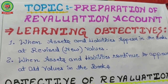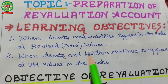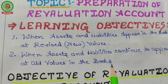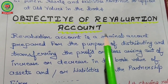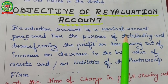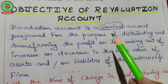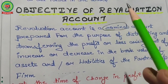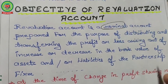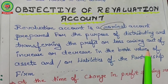The topic is preparation of the revaluation account. The learning objectives are: when assets and liabilities appear in the books at revised new values, and when assets and liabilities continue to appear at old values. The objective of the revaluation account — revaluation account is a nominal account. The rule of nominal: debit all expenses and losses, credit all incomes and gains. So revaluation account only deals with losses and gains.